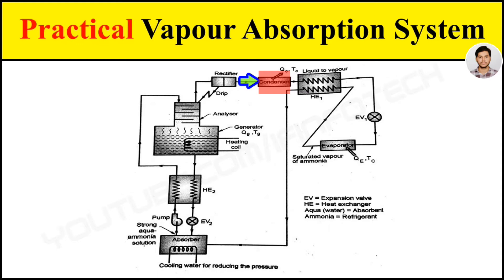If the water particles are not completely removed, they will enter the expansion valve where they freeze and choke up the pipeline. The strong ammonia vapor passes through the condenser where it is cooled and changes phase, rejecting the latent heat to the cooling water.